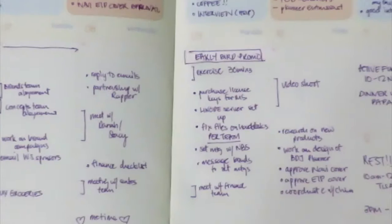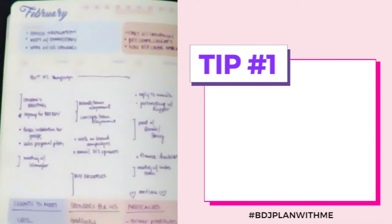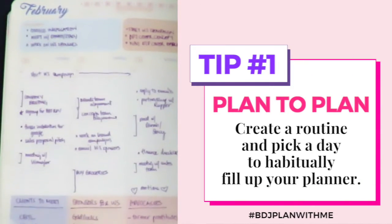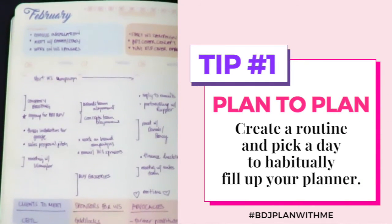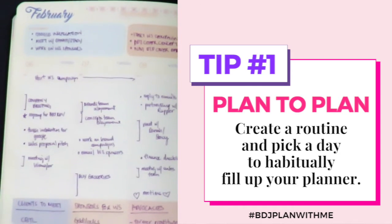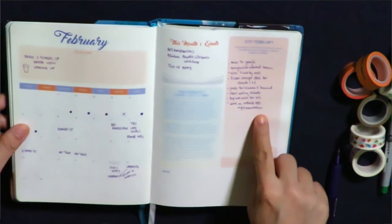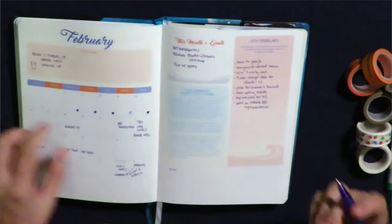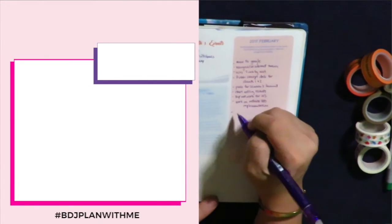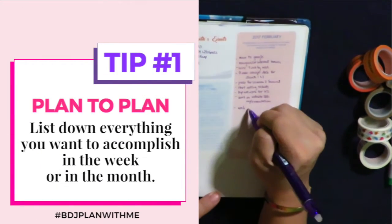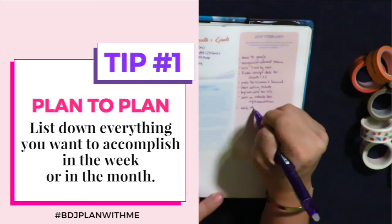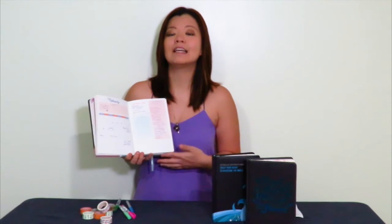First tip is to plan to plan. Essentially at the start of the week, or every Sunday, you plan out your week — you list down all the things you have to do for the week. Or if it's the start of the month, you can randomly list all the things you want to do for the month and then slowly assign them throughout the weeks, or on a per-day basis.